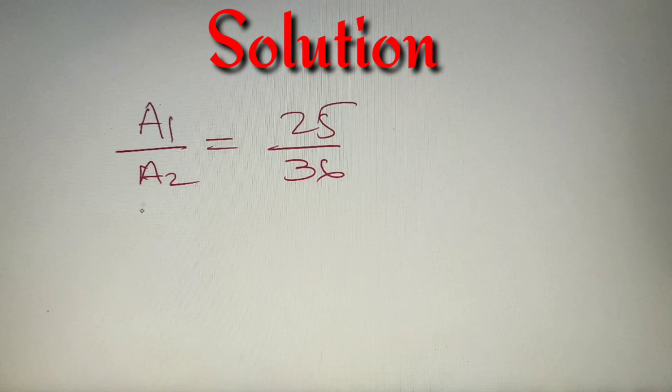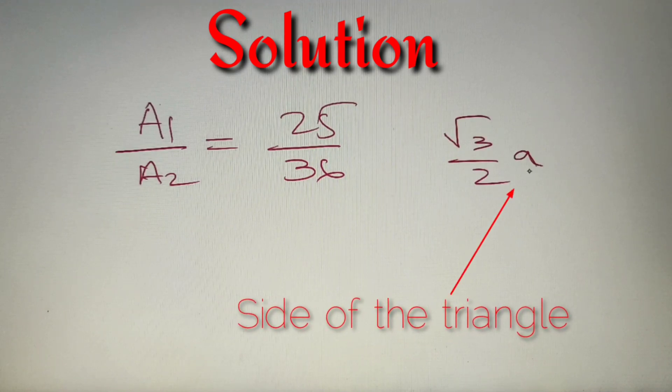So we are given that the areas of two triangles a1 and a2 which are equilateral are in the ratio of 25 is to 36. So we can say that a1 by a2 is equal to 25 by 36. Now we have to find what is the ratio of the altitudes. The altitude of an equilateral triangle is equal to root 3 by 2a.